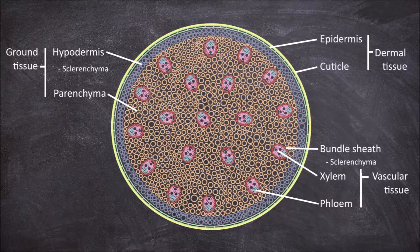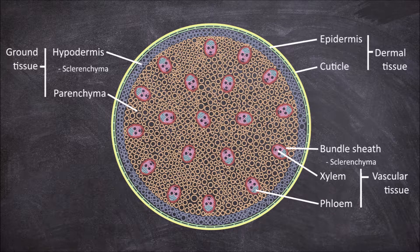The xylem is involved in the transport of water from the roots to the stems, whilst the phloem is involved in the movement of food products made in the leaves down through the rest of the plant.